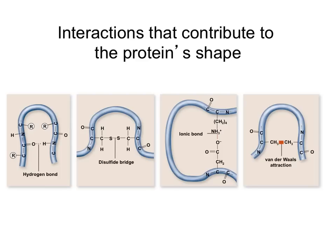And the tertiary structure is determined by interactions between the R groups. So if you remember, the secondary was by interactions between the amino and the acid groups. And all amino acids have an amino and an acid group, so that is a pretty set form of folding. But here, every amino acid has a different R group, so the possibilities on how they interact are very wide.